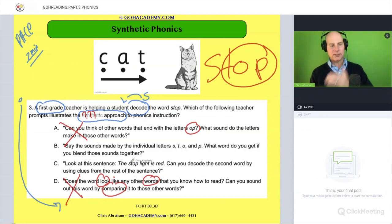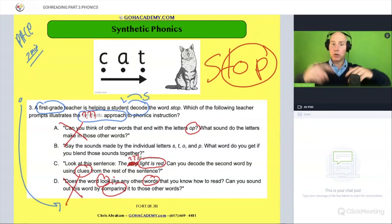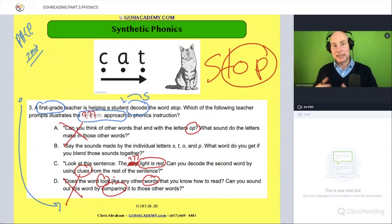Is it C? Look at the sentence. The stoplight is red. Can you decode the second word by using clues? I guess they're referencing context clues from the rest of the sentence. So when we say a context clue, we're looking at surrounding words in the sentence or passage that help us identify an unfamiliar word. And this type of, the light is red, if a student didn't know how to decode the word stop, they would look for surrounding words and phrases: the light is red. And if they were decoding this and they said stop, the stop is red or the stoplight is red, they would be like, that doesn't make sense. Oh, it's gotta be stop because stop goes with light is red. Stoplight is red.